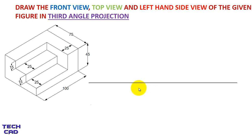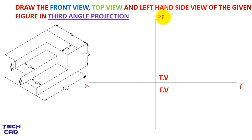First of all you have to make the XY line. In third angle projection, the top view is above the XY line and the front view is below the XY line according to the reference plane. For the side view we need a profile plane line, and the side view is on the left side of the profile plane because it is a left hand side view in third angle projection.